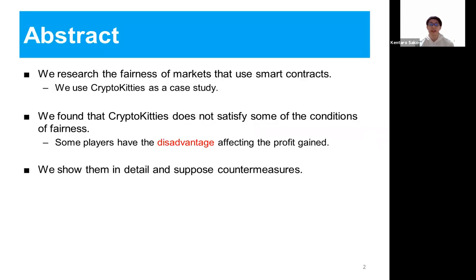Our research investigates the fairness of markets that use smart contracts. As a case study, we focused on a game called CryptoKitties. We found that CryptoKitties does not satisfy some of the conditions of fairness. We proved that some of the players have a disadvantage to play CryptoKitties, affecting the profit gained. We also suggested countermeasures to improve fairness.